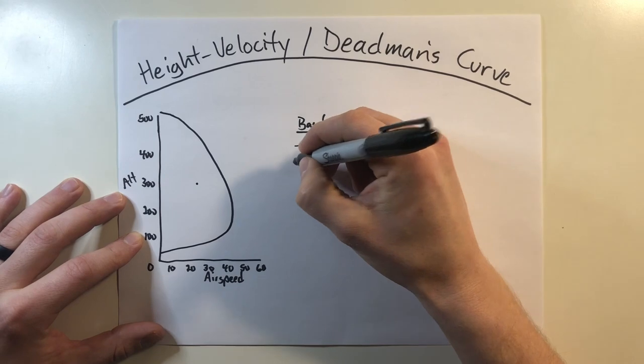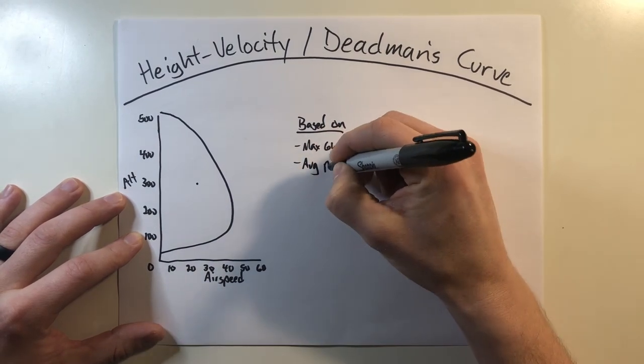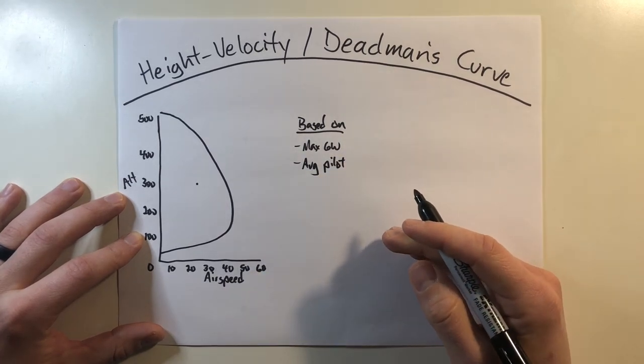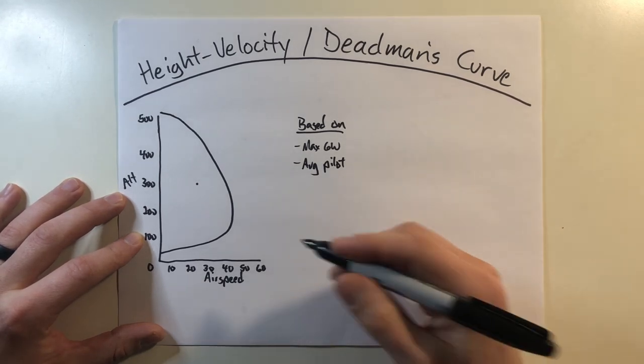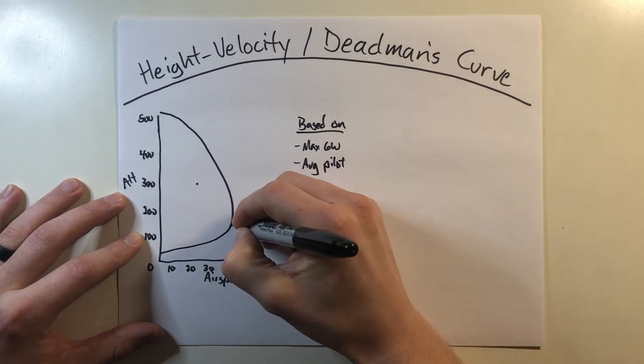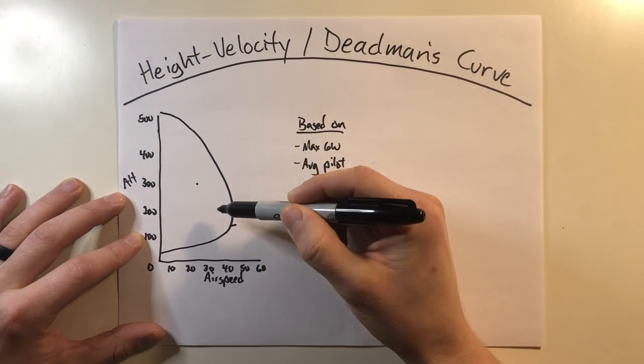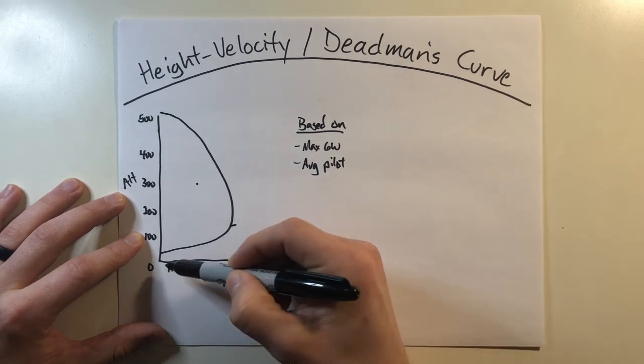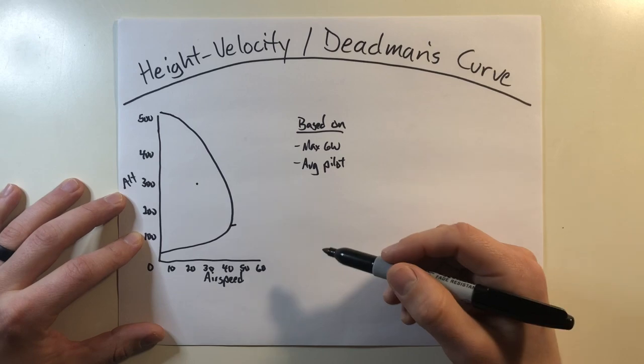Alright, so the next factor that it's based off of is that it's based on the performance of an average pilot. Now this is a proficient pilot, this is not a pilot in training, this is one who understands how to do an auto rotation and what the signs are. But generally, the chart gives you a little bit of leeway above what's called the knee of the chart, where it's built in with about a one second delay between an engine failure and the pilot inputting a corrective action.